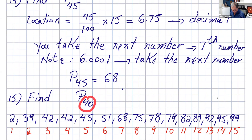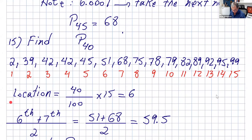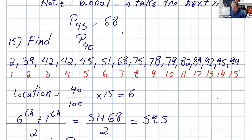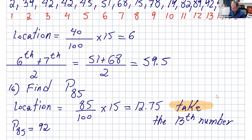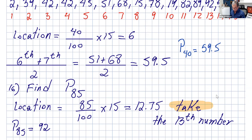If you want to find p40, let's go over this same thing. The location is 40 divided by 100 times 15, and we got 6. Remember, this is a whole number. If it's a whole number, you don't take that number. You take the sixth number plus the seventh number, and divide that by 2. The sixth number is 51, the seventh number is 68. You average that and get 59.5. So, p40 is 59.5, or 59.5 is the 40th percentile.